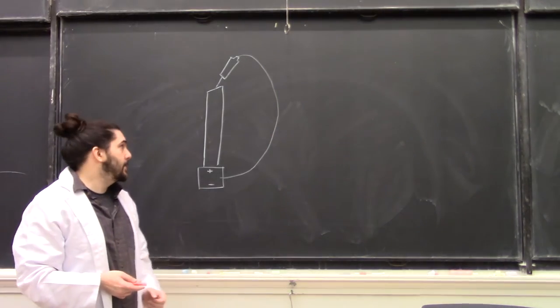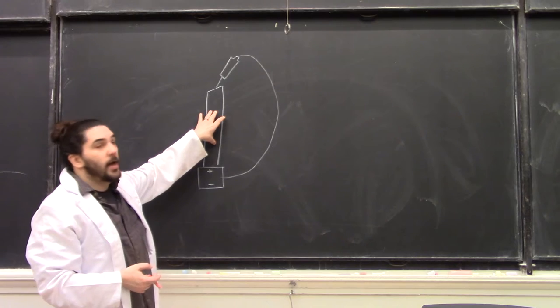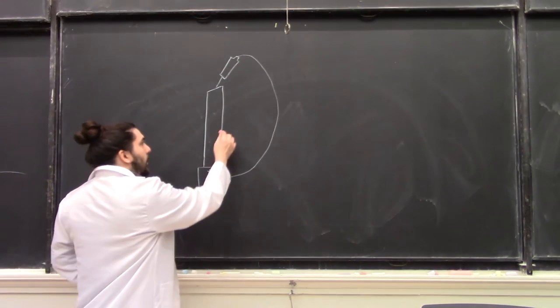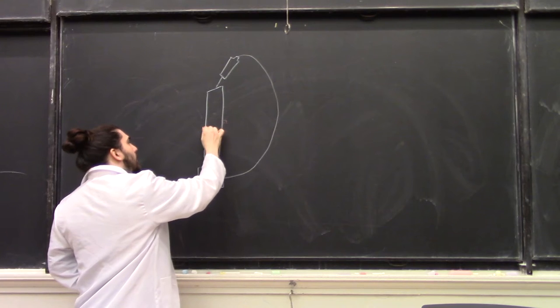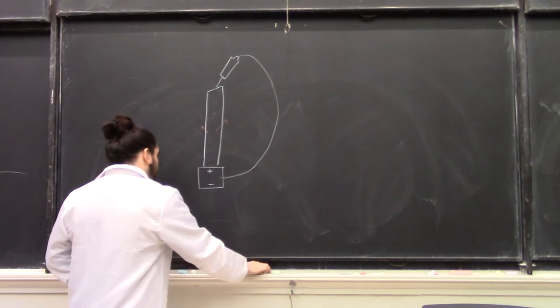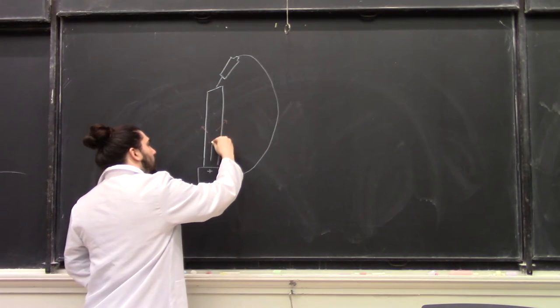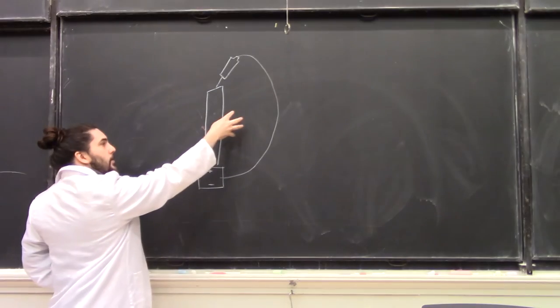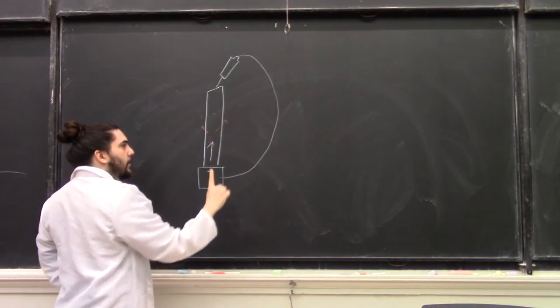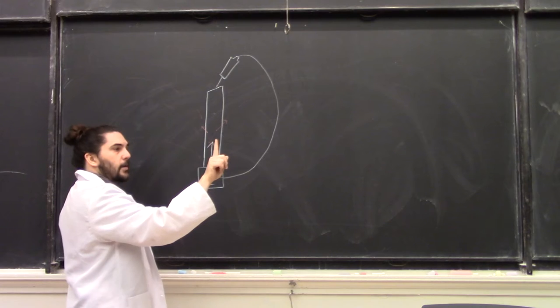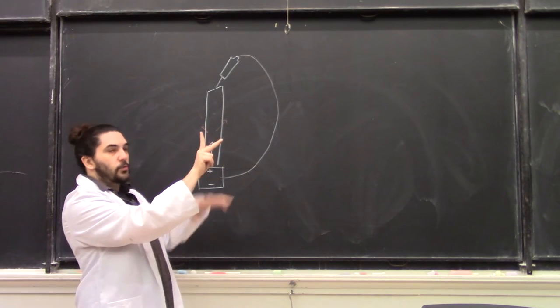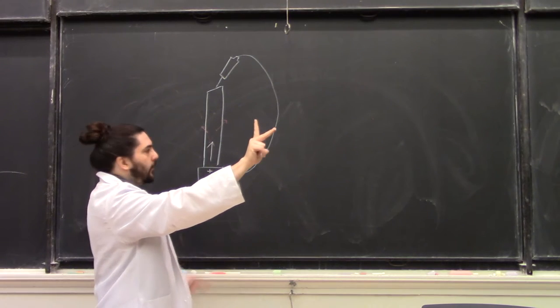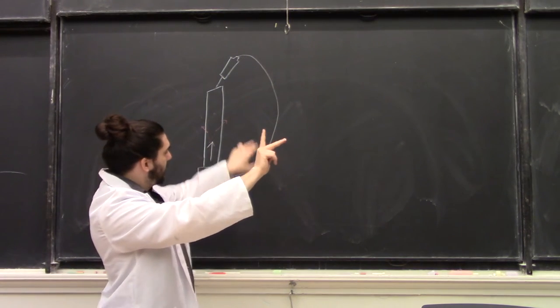If we're holding the wire in place and let this rod spin freely, we can see that there's a magnetic field pointing this way and this way, and there's current going up. So on this side we have current pointing up and we have magnetic field pointing up and to the right, so there's going to be a force directed that way into the board.